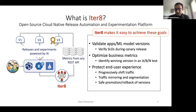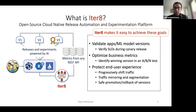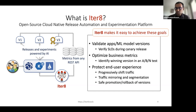In doing these types of releases and experiments, we also want to protect the end user experience. So if a version is satisfying SLOs, maybe we want to shift traffic to it gradually. But if it's not satisfying SLOs, we want to minimize its exposure to end users. We may want to bring in other safety mechanisms like traffic shaping, traffic mirroring, and segmentation to limit exposure of versions to users before they are fully rolled out. And we also want to safely promote and rollback versions if necessary.